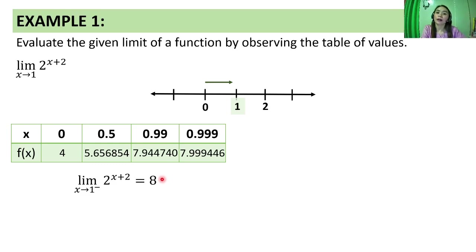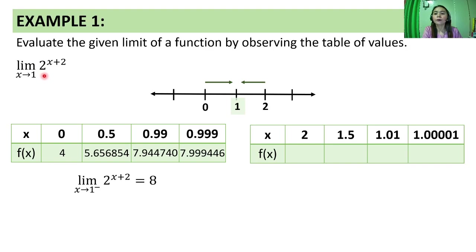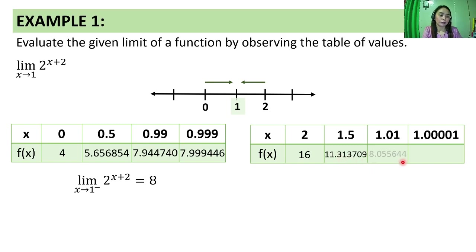Now let's get x values approaching 1 from the right of the number line: 2, 1.5, 1.01, 1.0001 — all approaching 1. We substitute these into the function. For x = 2: 2 raised to 2 plus 2 gives 2 raised to 4, which equals 2 times 2 times 2 times 2, equal to 16. We do this for the remaining values. Here are all the computed function values.